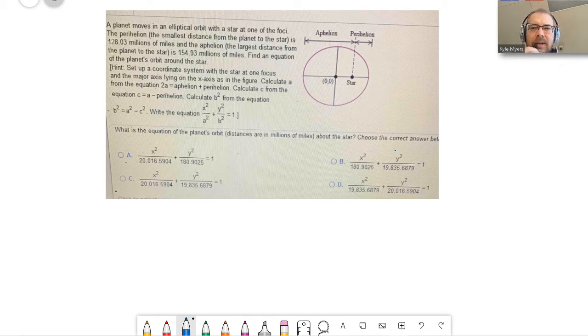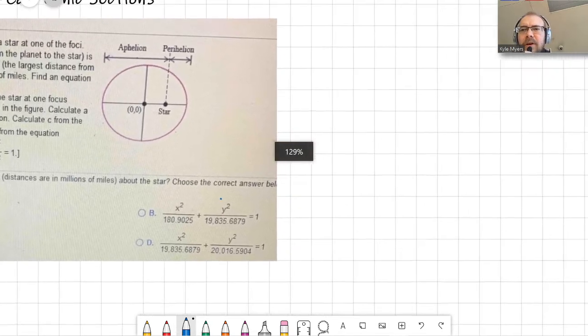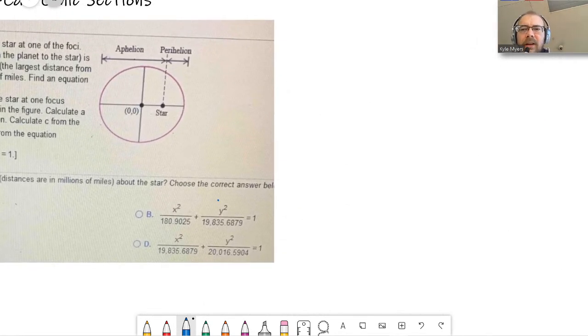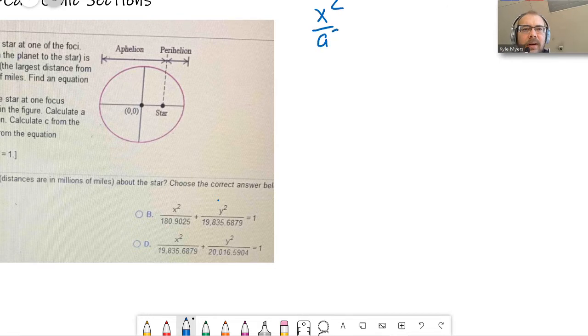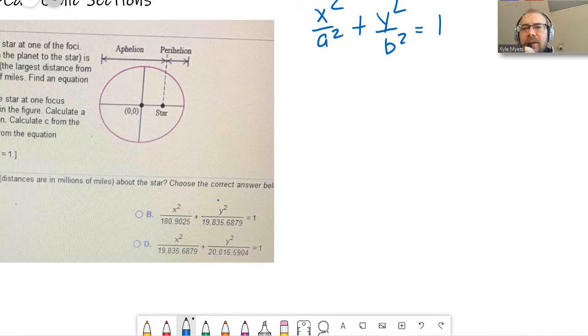It looks like they give us pretty much everything in the picture here. What we're trying to do is, if it's an elliptical orbit, then we want an ellipse. If we want an ellipse, and it looks like it's centered at the origin, it would just be x squared over a squared plus y squared over b squared equals one. Really, if it's centered at the origin and the planet's moving around this ellipse, we just need to figure out what a and b are. That's it.